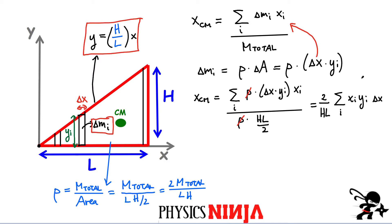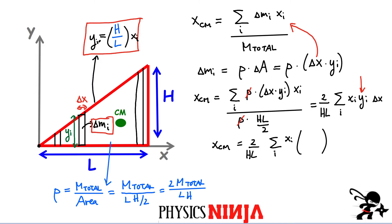Now the height Y_i changes as we move along X, and it's given by our equation for the straight line: Y_i equals H over L times X_i. Substituting that into the summation, we get the prefactor two over HL, and in the sum we replace Y_i with H over L times X_i. We can cancel the H terms and combine the L terms, giving two over L squared times the sum of X_i squared times delta X.